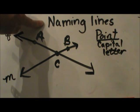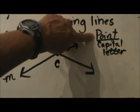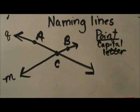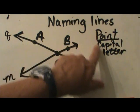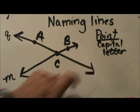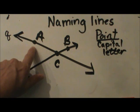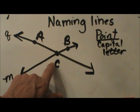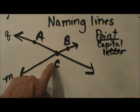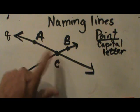In order to name a line, you need to know how to name a point. Let's go back over the concept of naming a point. You name a point with a capital letter. For example, this is point A, point B, and point C. You name them as point A, point B with capital letters.